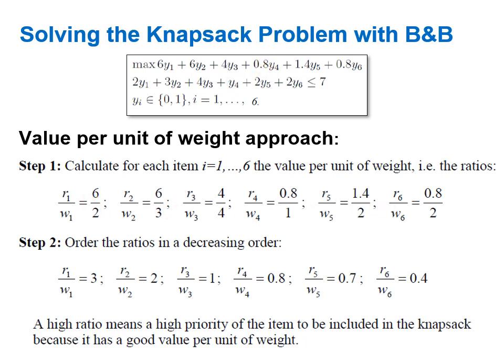In step two we order these ratios in decreasing order, because we want the item with the largest ratio first. In this example, by chance the ratios are already given in order — the first item has the highest ratio, the second item has the second highest, and so on — but in many examples you will need to sort them.